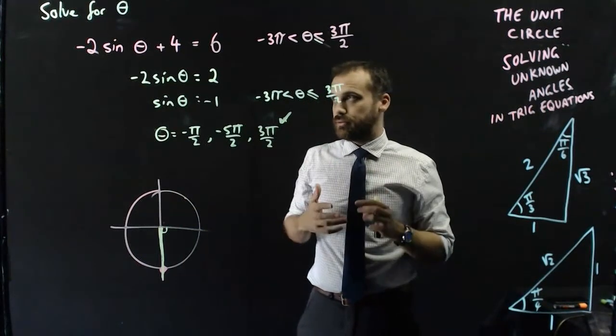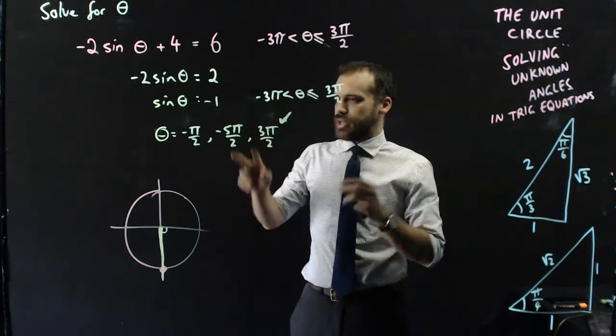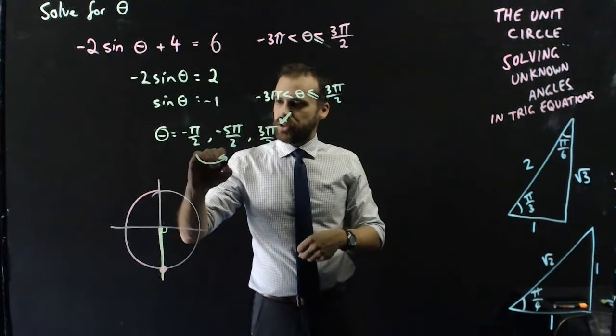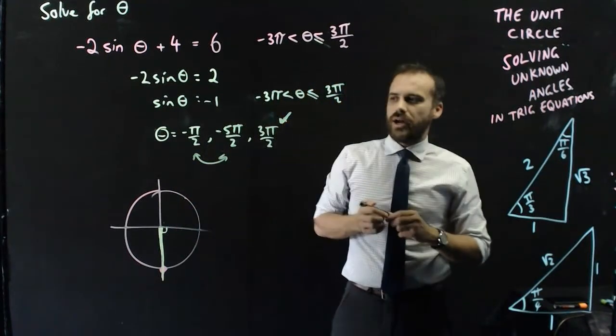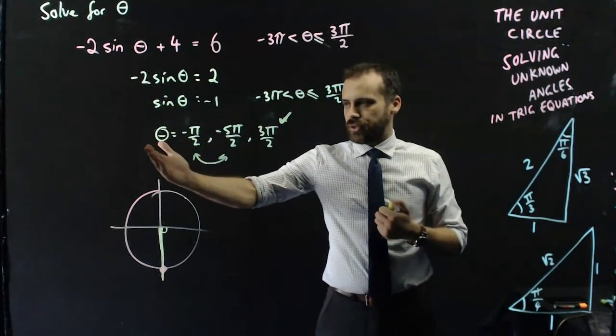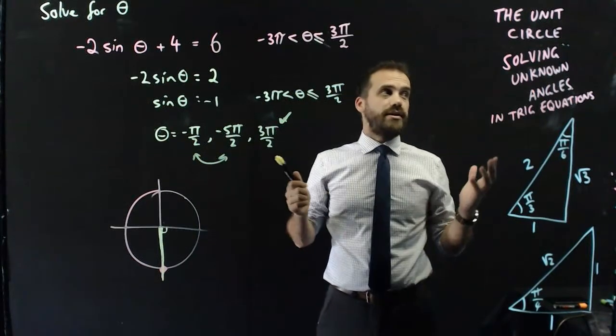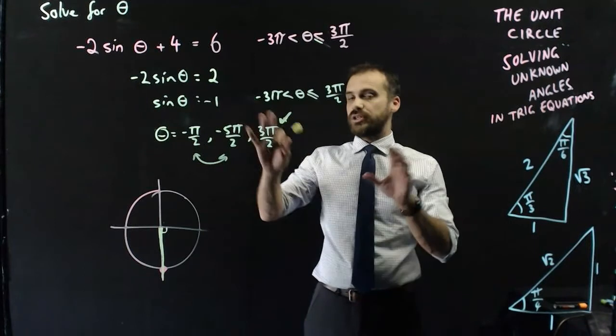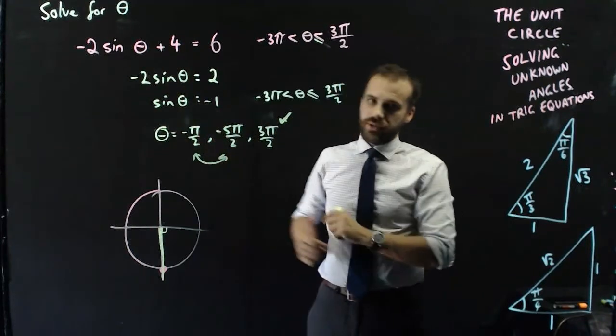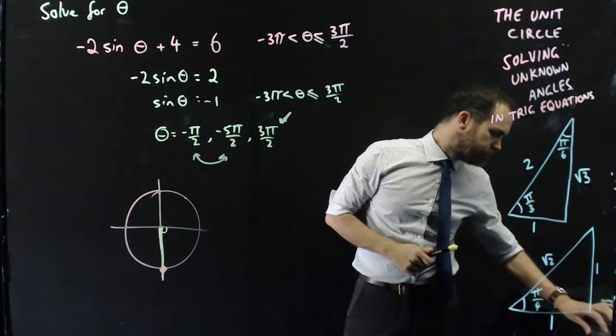All right, three answers there. If I was being pedantic, I'd probably swap those around just so that they're in the correct order. But that is how you solve unknown angles in trig equations. You simplify them, and then you work them out.